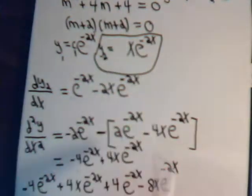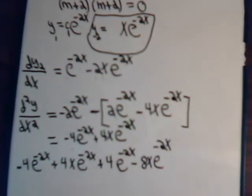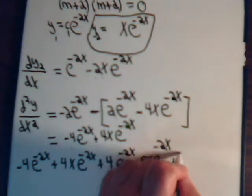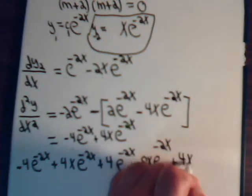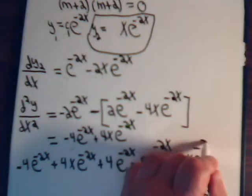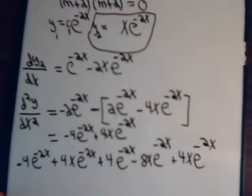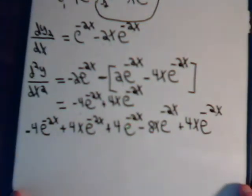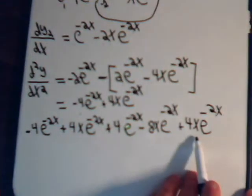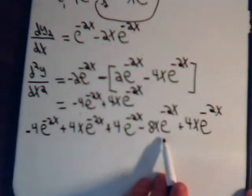And we have to have plus 4y. And y is this, so we have plus 4x e to the minus 2x.